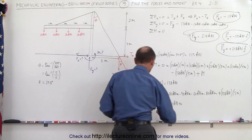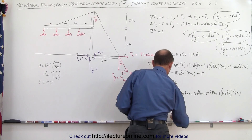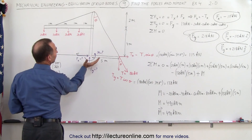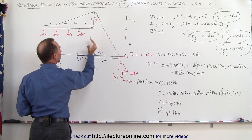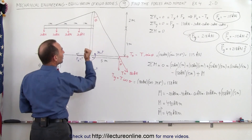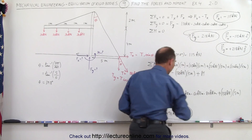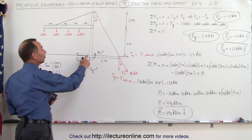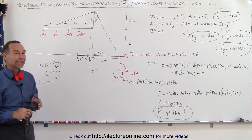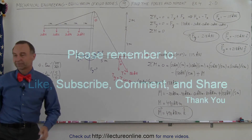Writing the moment as a vector quantity: the moment equals 490 kilonewton-meters. The moment acts in a clockwise direction which is positive, so it points outward in the z direction — positive z. We have now found the two reaction forces and the moment at the bottom of the post, expressed as vector quantities.